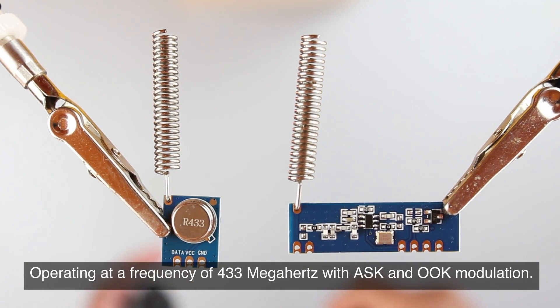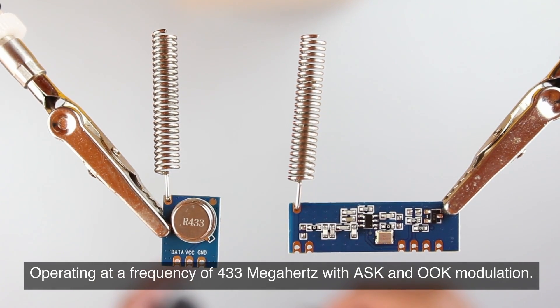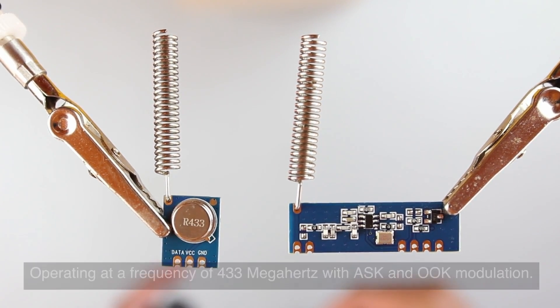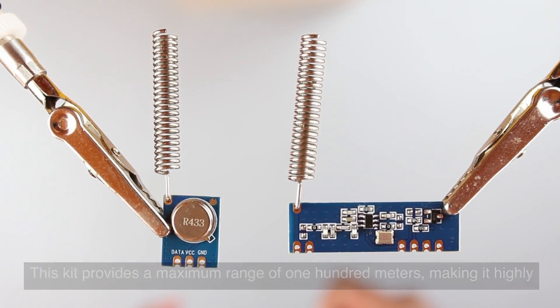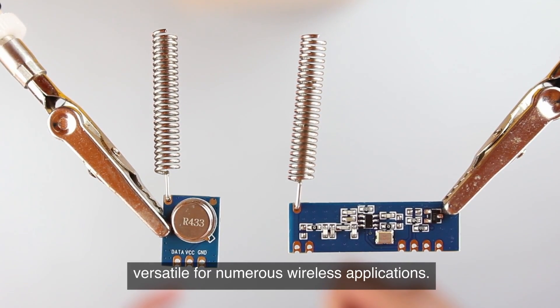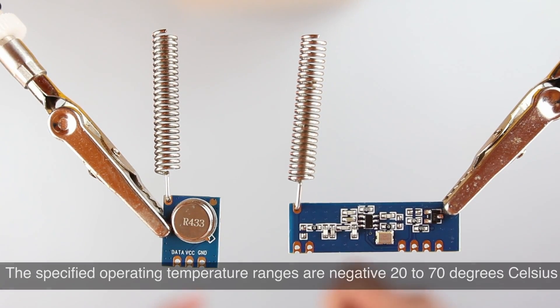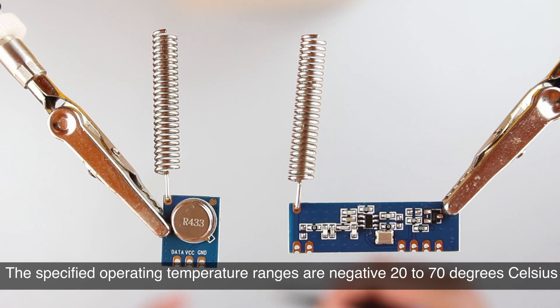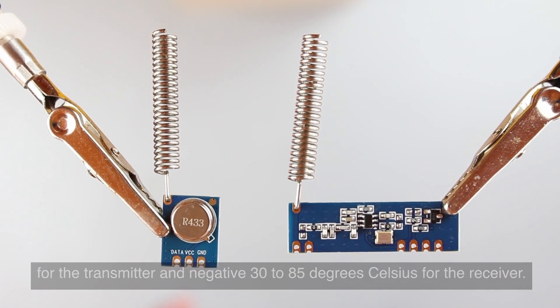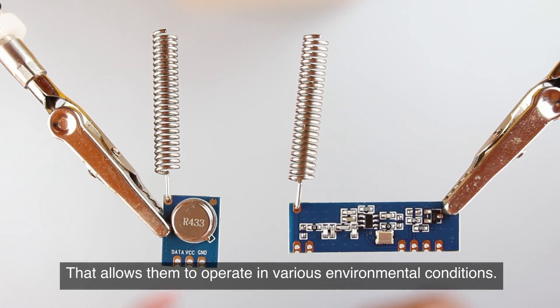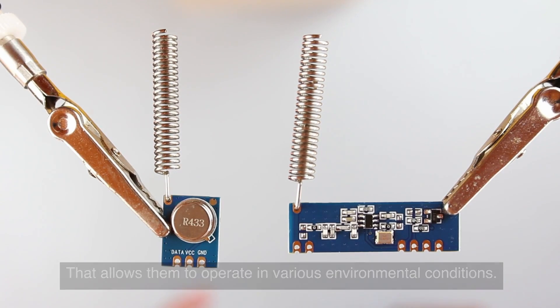Operating at a frequency of 433 megahertz with ASK and OOK modulation, this kit provides a maximum range of 100 meters, making it highly versatile for numerous wireless applications. The specified operating temperature ranges are negative 20 to 70 degrees Celsius for the transmitter, and negative 30 to 85 degrees Celsius for the receiver, allowing them to operate in various environmental conditions.